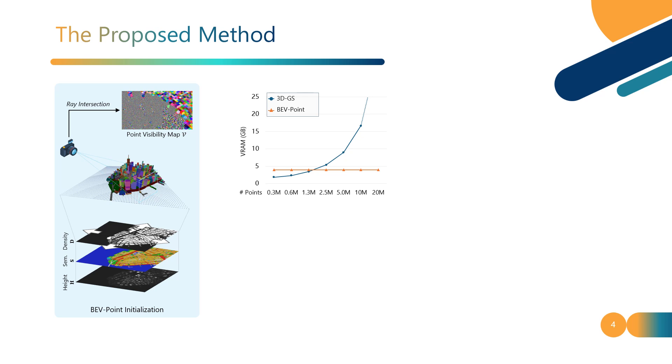As shown in the line charts, the proposed BEV point ensures that the number of points requiring optimization remains constant regardless of scene size, significantly reducing video memory usage. Additionally, the file storage size is also significantly reduced due to this highly compact representation.